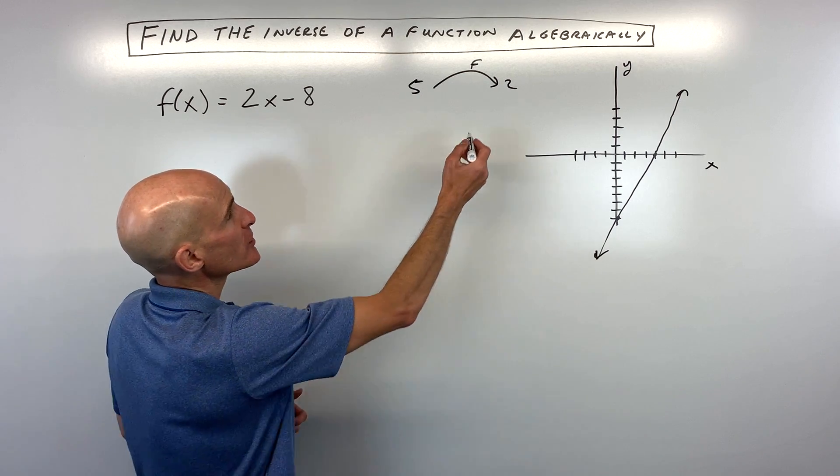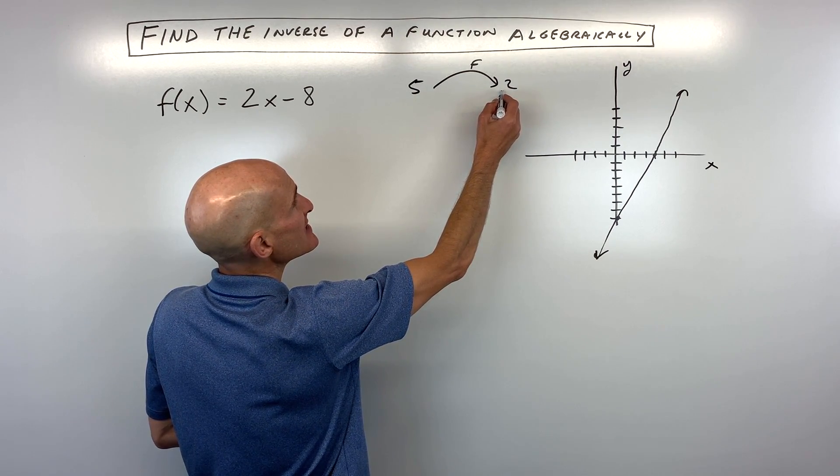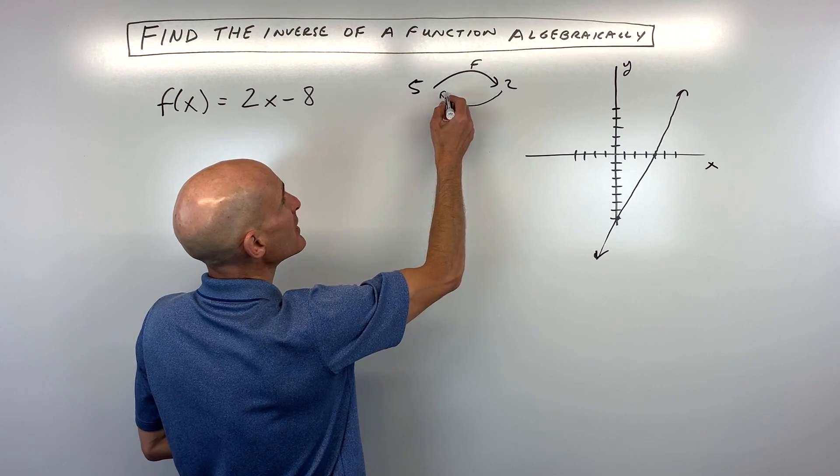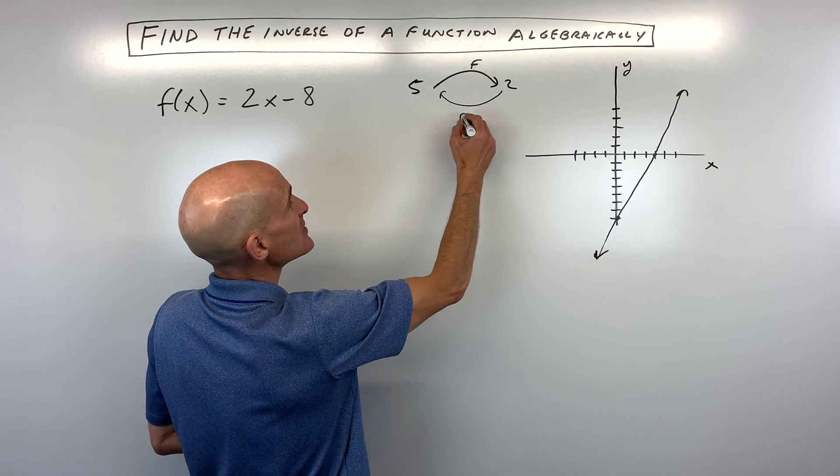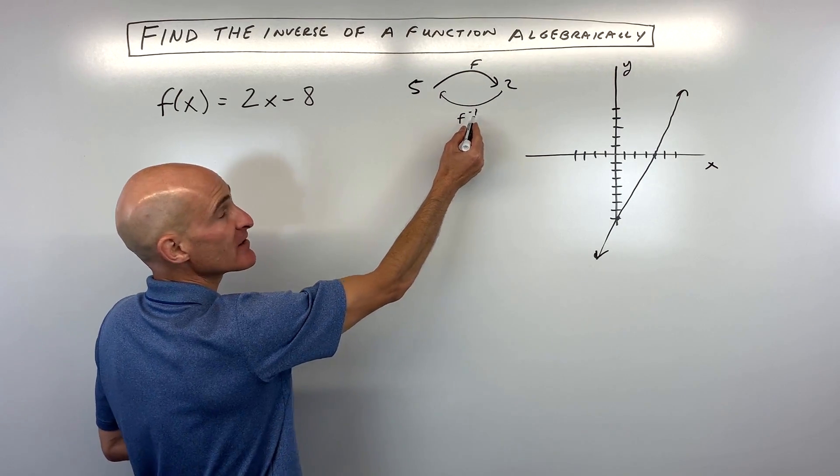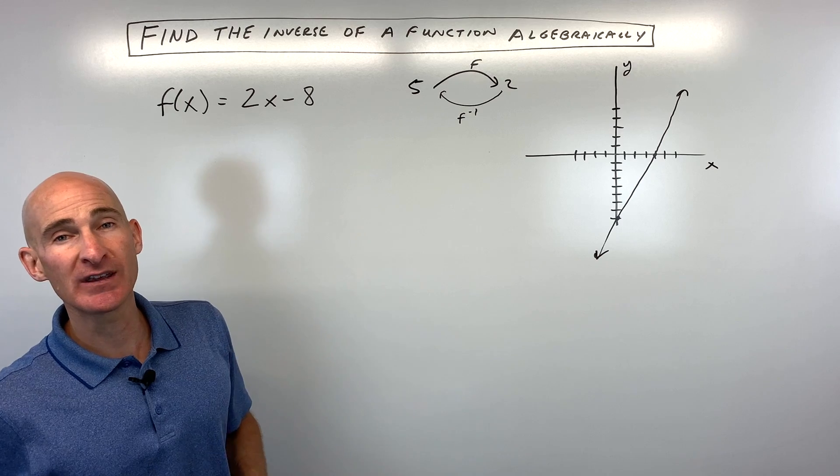But what we're looking for is the inverse function that will take this output and bring us back to this input. So that's what we call f inverse, or f to the negative 1. This is the representation for the inverse of the function.